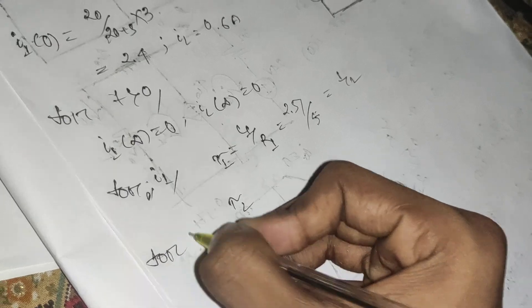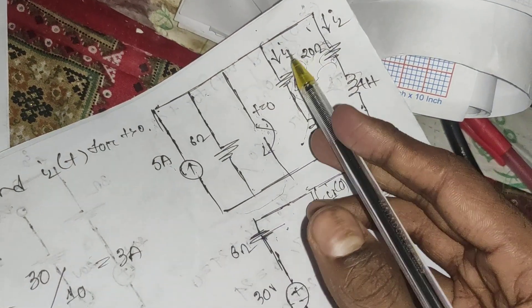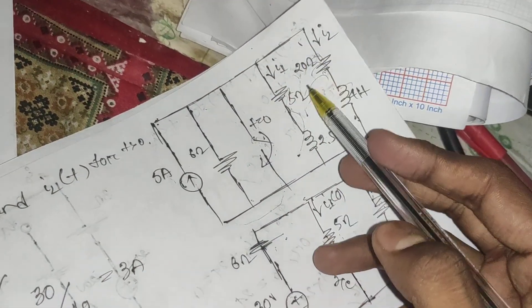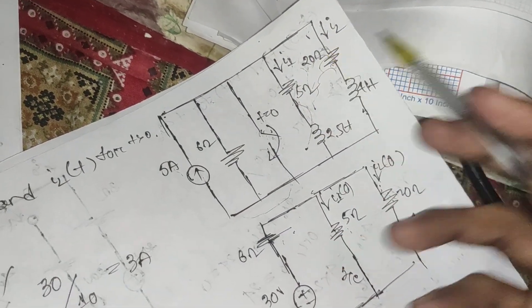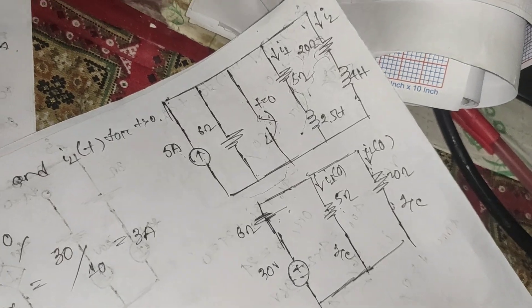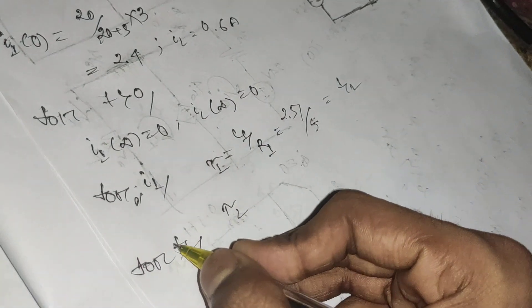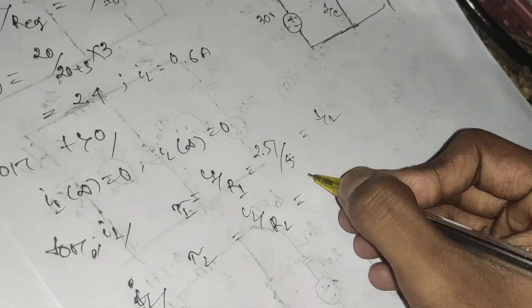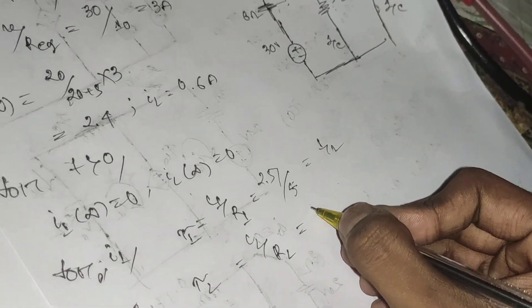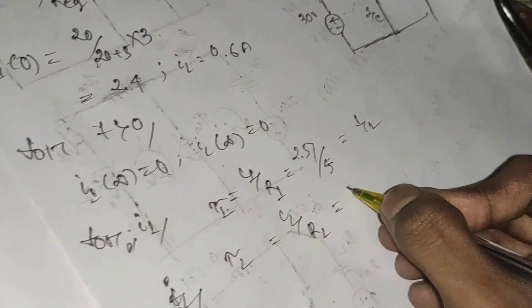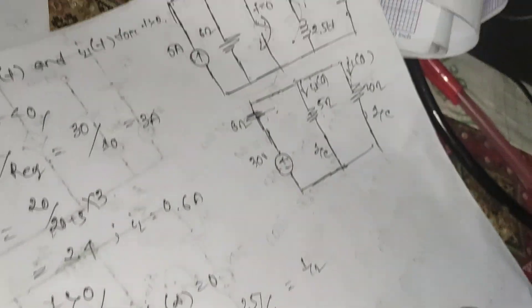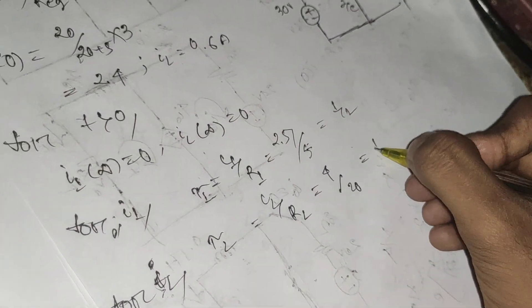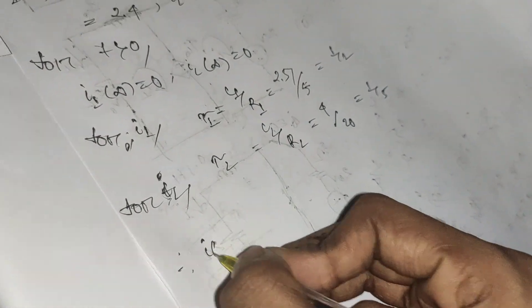For i2, since no current is flowing through the other elements, τ2 = L2 / R2. The value of L2 is 4 H and R2 is 20 ohms, so τ2 = 4 / 20 = 1/5 second.